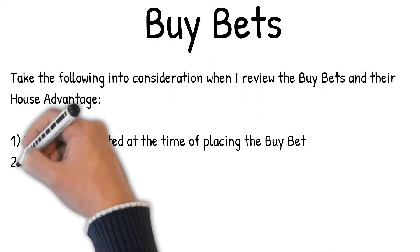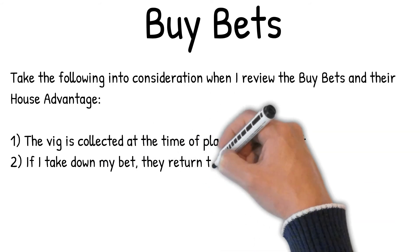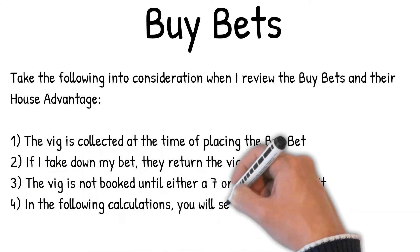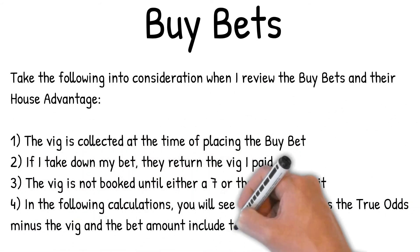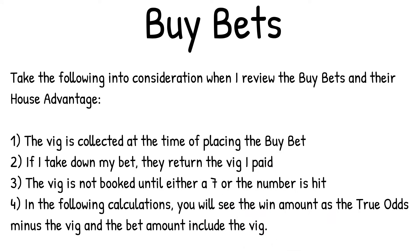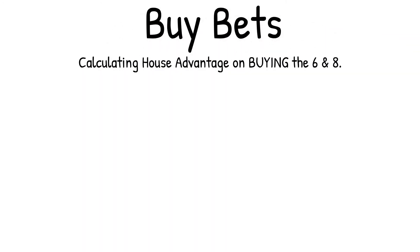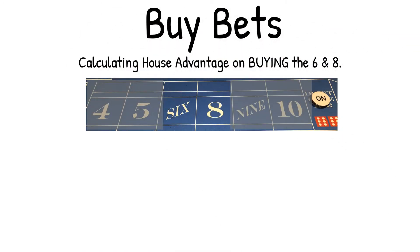Buy bets — take the following into consideration when reviewing buy bets and their house advantage. One: the vig is collected at the time of placing the buy bet. Two: if you take down your bet, they return the vig you paid. Three: the vig is not booked until either a seven or the number is hit. Four: in the following calculations, the win amount is the true odds minus the vig, and the bet amount includes the vig.